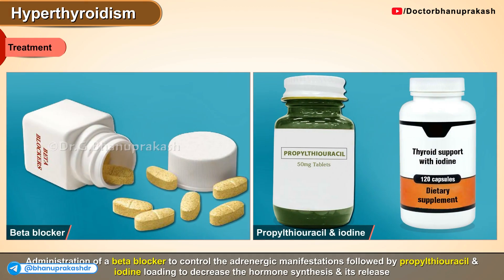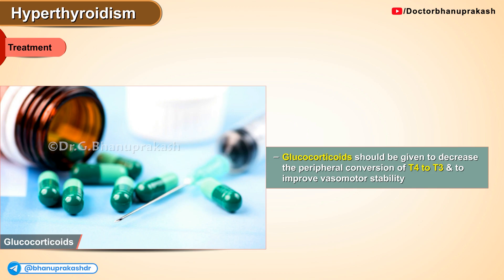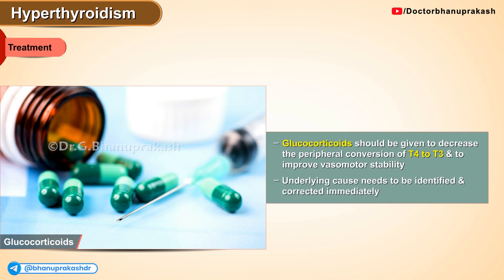Treatment is with the administration of a beta blocker to control the adrenergic manifestations, followed by propylthiouracil and iodine loading to decrease the hormone synthesis and its release. Glucocorticoids should be given to decrease the peripheral conversion of T4 to T3, which is the most active form, and also to improve vasomotor stability. The underlying cause needs to be identified and corrected immediately.